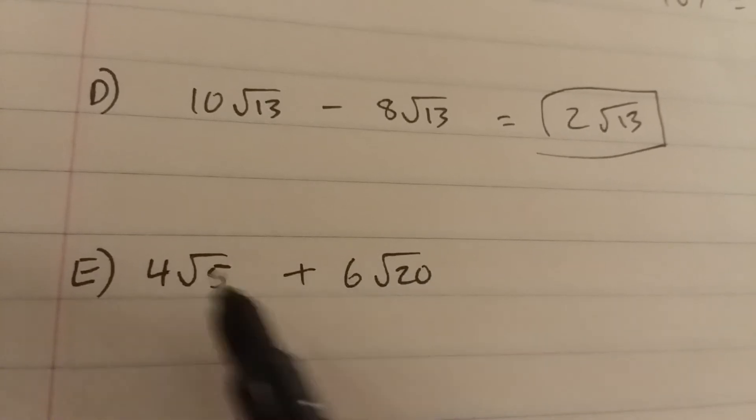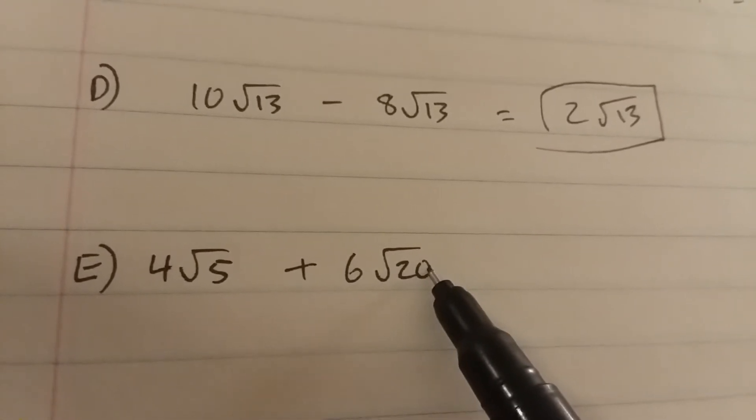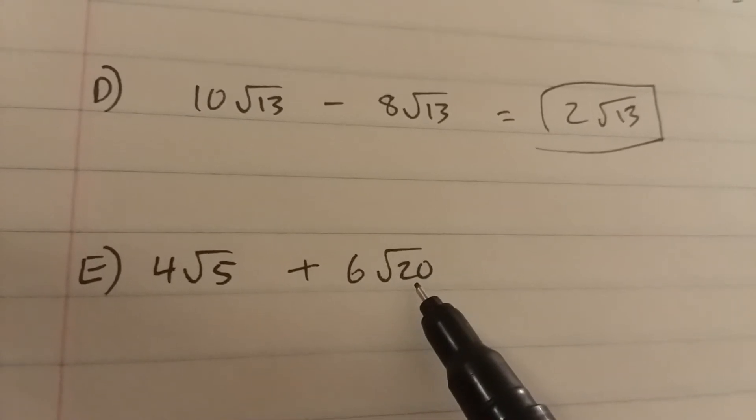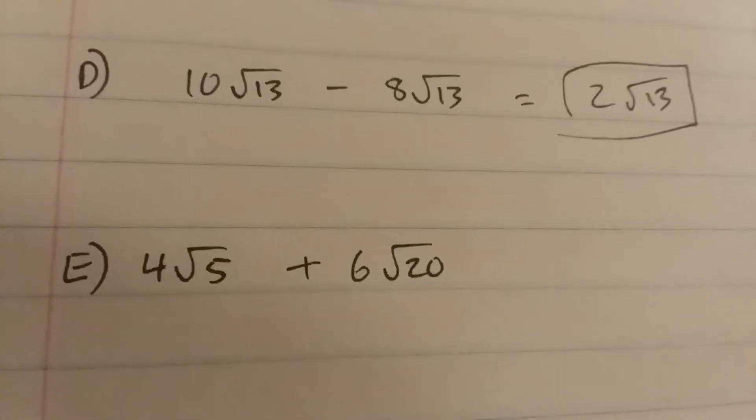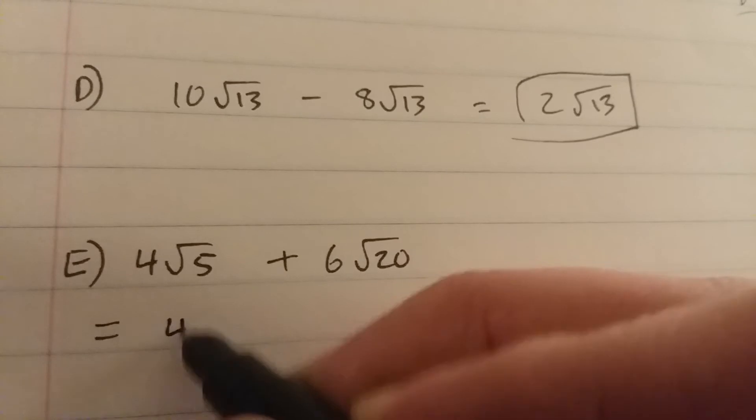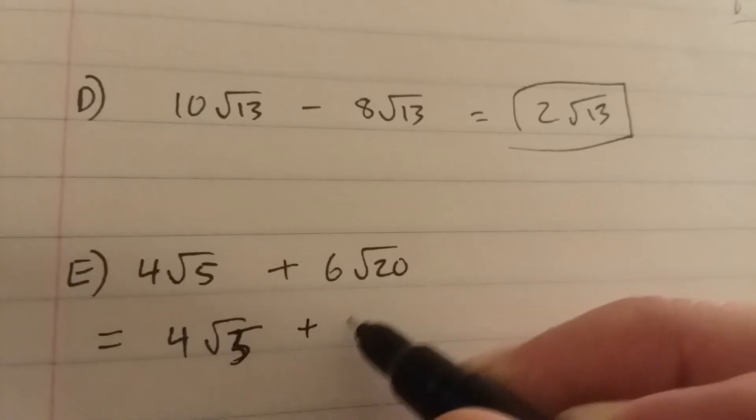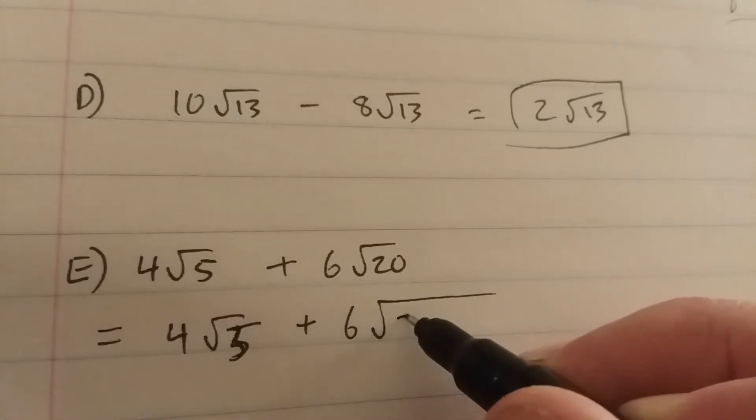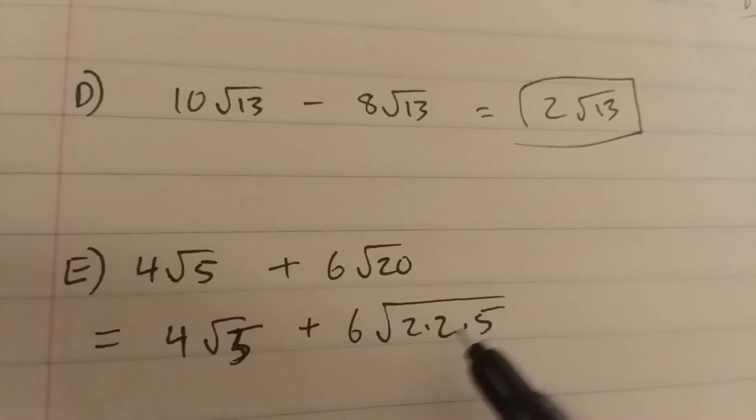If you notice here, we don't have the same value under the root, but we can make this 20 become the square root of 5 if we factor and simplify. This is 4 times the square root of 5 plus 6 times the square root of 2 times 2 times 5. 2 times 2 is 4. 4 times 5 is 20.